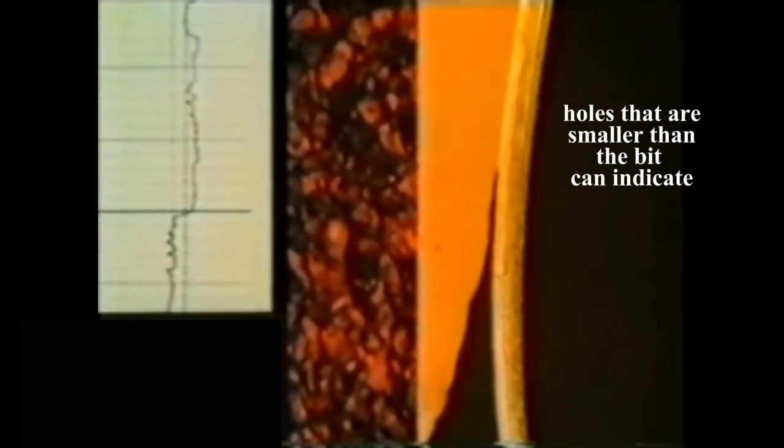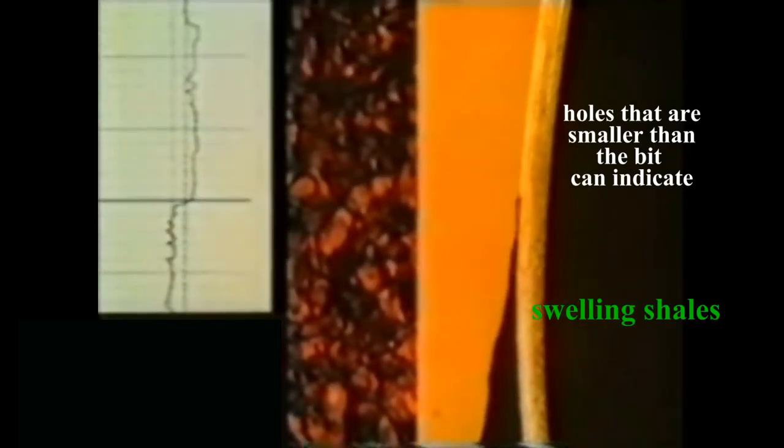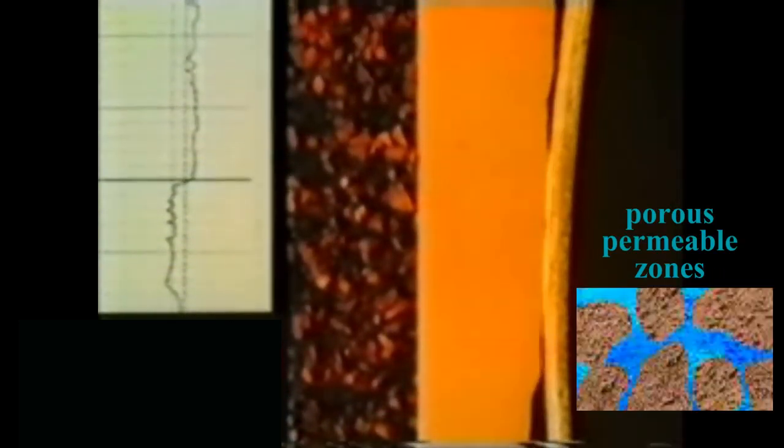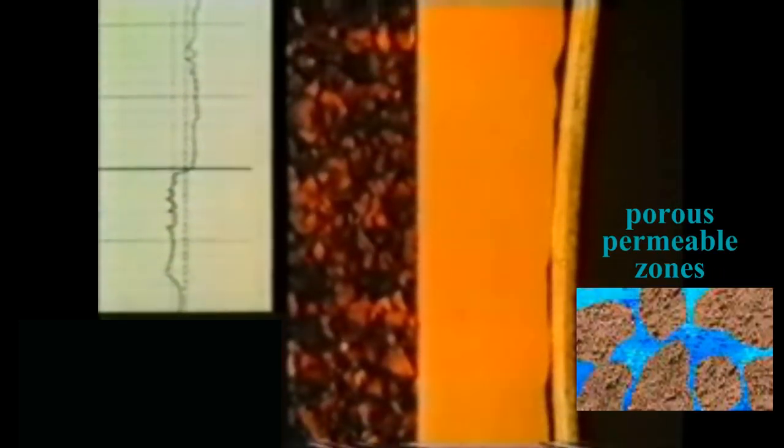Conversely, holes that are smaller than the bit can indicate swelling shales or large mud cake development, which indicates porous permeable zones. Each of these indications can impact the drilling program and need to be factored into that program.